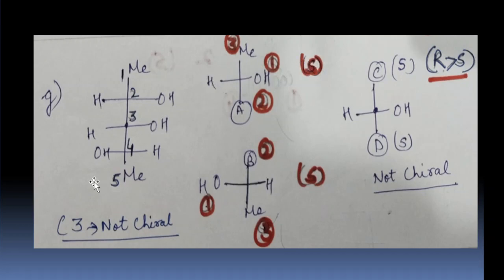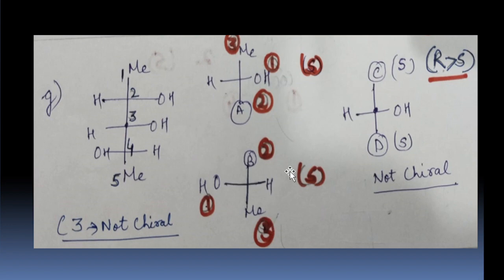Now discussing the 4th carbon: OH is 1, group B is highly substituted giving 2, Me is 3, and hydrogen is 4. Going 1, 2, 3 we get R. But hydrogen is on the horizontal, so the answer is S.